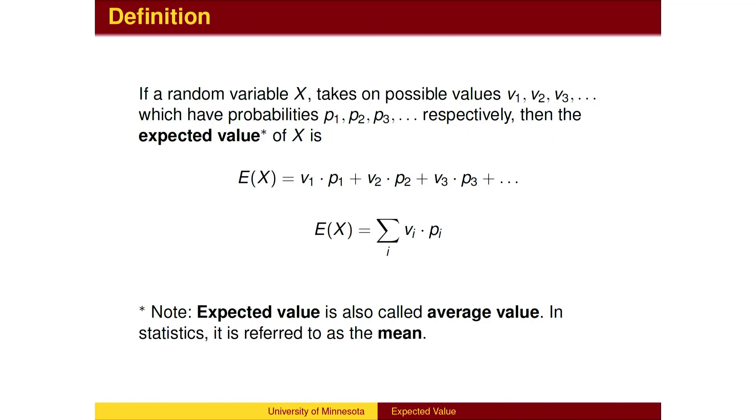This is the definition of expected value, also called average value. To find the expected value of a random variable, multiply each value by the probability that it occurs and add them up.